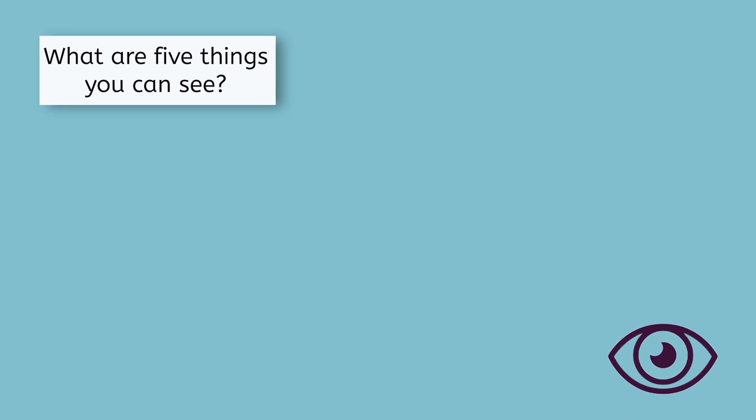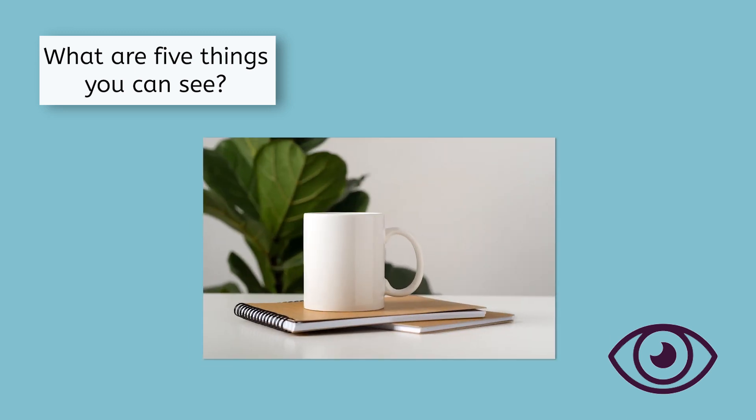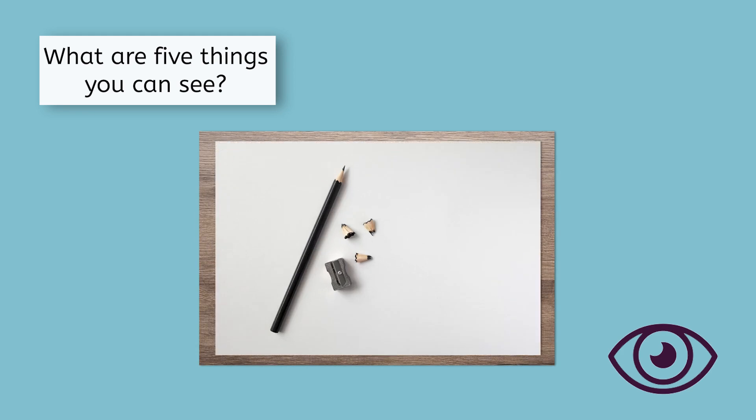As we move through the practice, be aware of your breathing. Notice your surroundings. What are five things that you can see? Maybe you notice a mug, a notebook, or a pencil. Pause the video if you need a moment to look around.